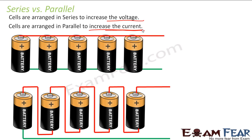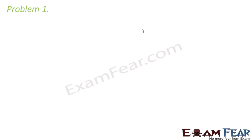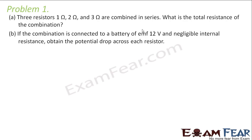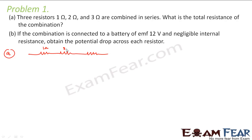So now let us go ahead and solve some problems. The first problem says: 3 resistors — 1 ohm, 2 ohm, and 3 ohms — are combined in series. What is the total resistance of the combination? If the combination is connected to a battery of EMF 12 volts and negligible internal resistance, obtain the potential drop across each resistor. So here we have 3 resistors connected in series: 1 ohm, 2 ohms, and 3 ohms.